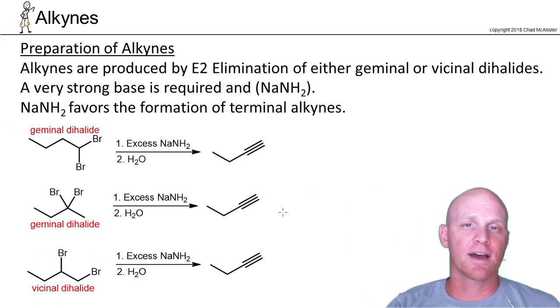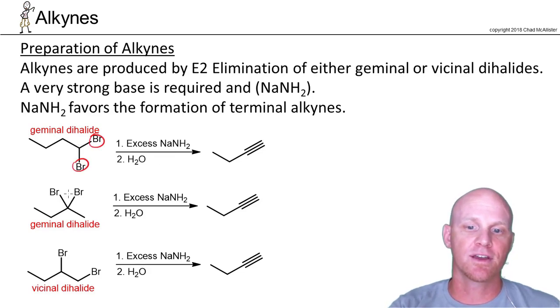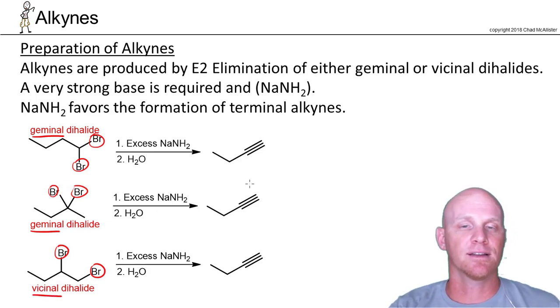So there's a couple different ways we could have those two good leaving groups arranged, and they could be on the same carbon as we see here as well as here. But they could be also on adjacent carbons as we see here. And if they're on the same carbon, we call those geminal dihalides. And if they're on adjacent carbons, we call that a vicinal dihalide.